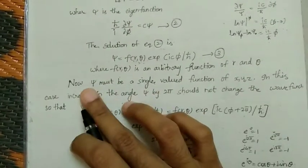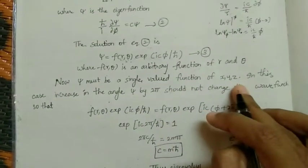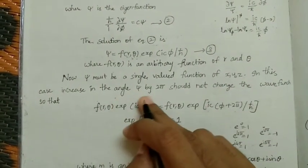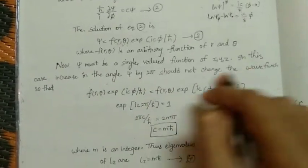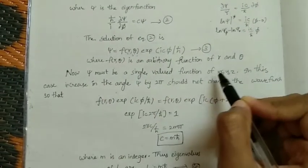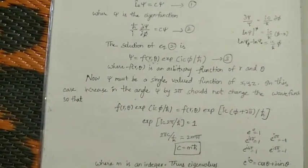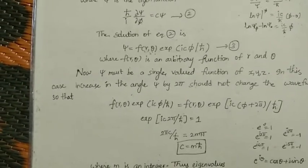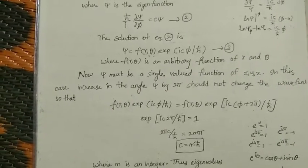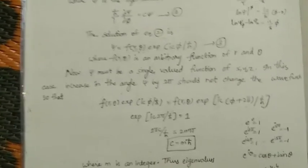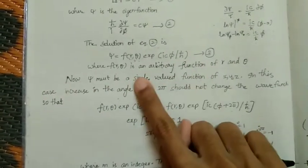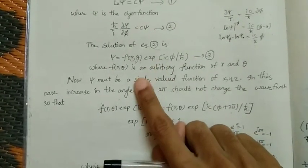Now xi must be a single-valued function of x, y, z. An increase in the angle phi by 2-pi should not change the wave function. There are certain conditions the wave function must satisfy: it must be continuous, finite, and single-valued. Because wave functions relate to probability through the integral of xi times xi-star, the wave function must have these characteristics, especially being single-valued.